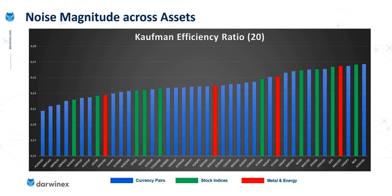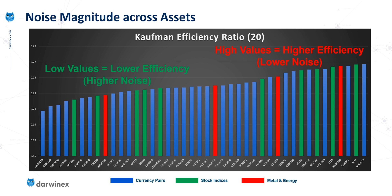The first thing I want to bring to your attention is how the interpretation of the efficiency ratio is different to that of price density. With price density, higher values represented higher levels of noise. But here, higher values represent higher levels of efficiency in the price action, and higher efficiency equates to lower noise. And likewise, the lower values on the left-hand side here are less efficient and therefore exhibit higher noise.